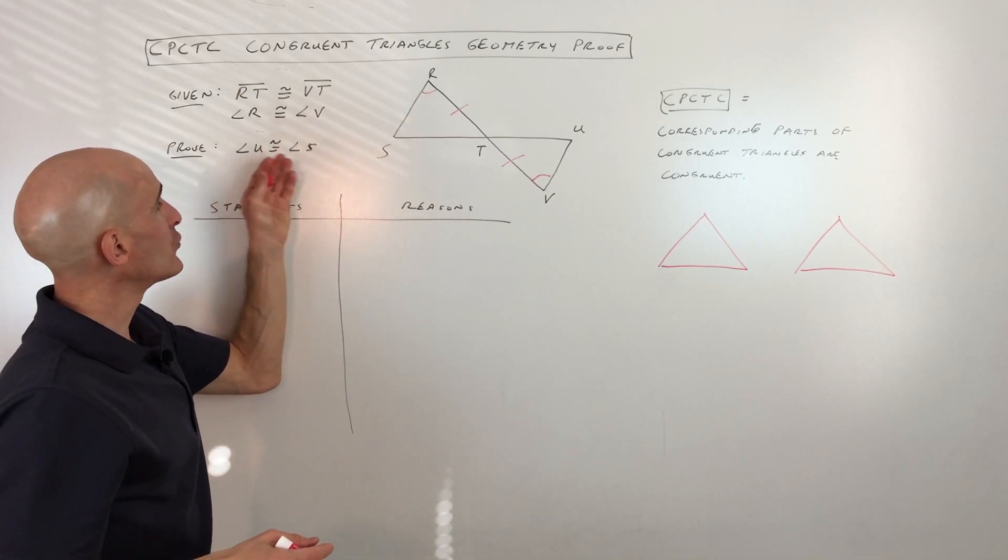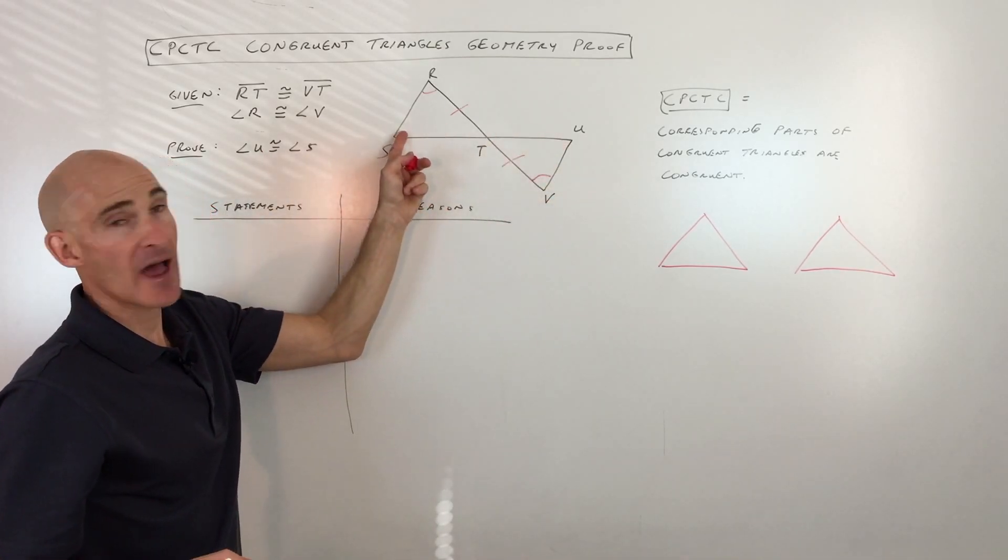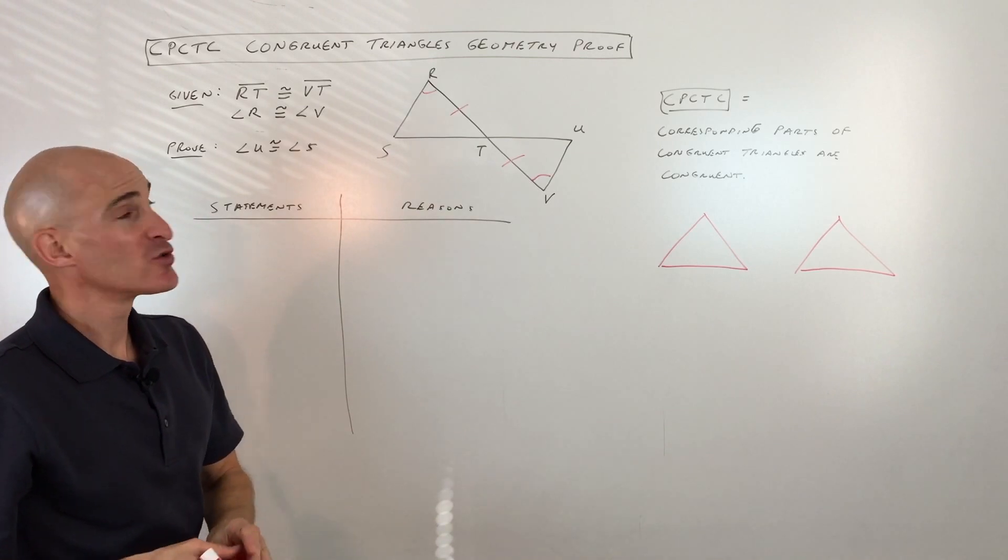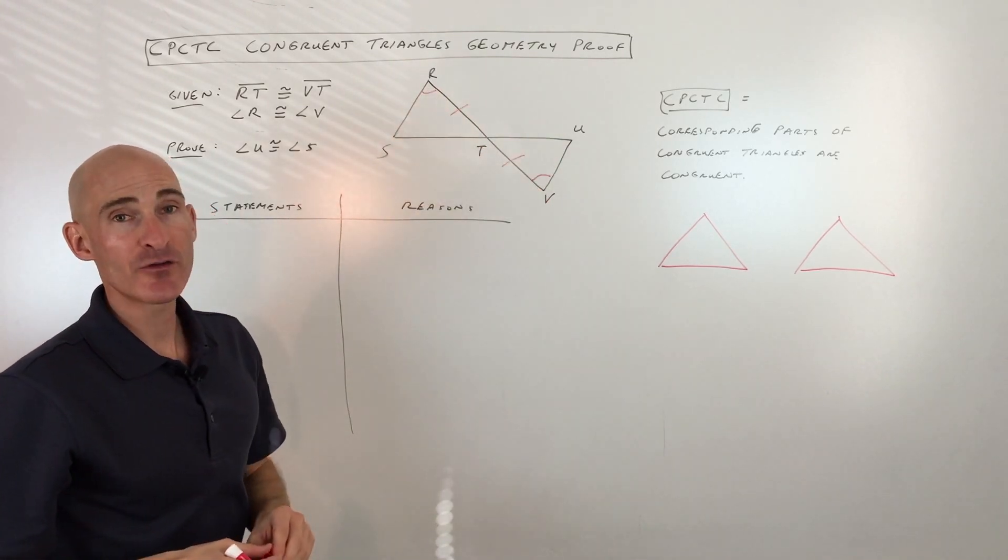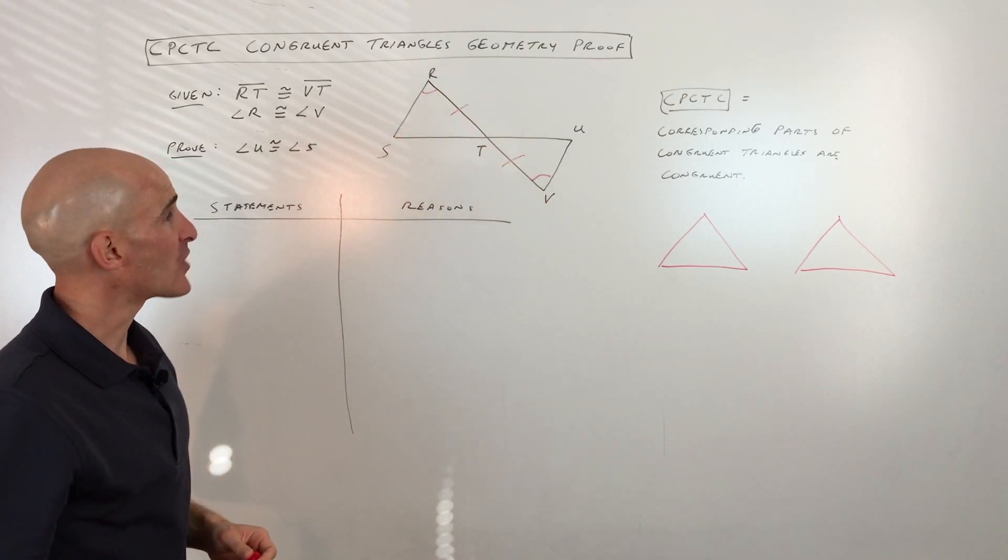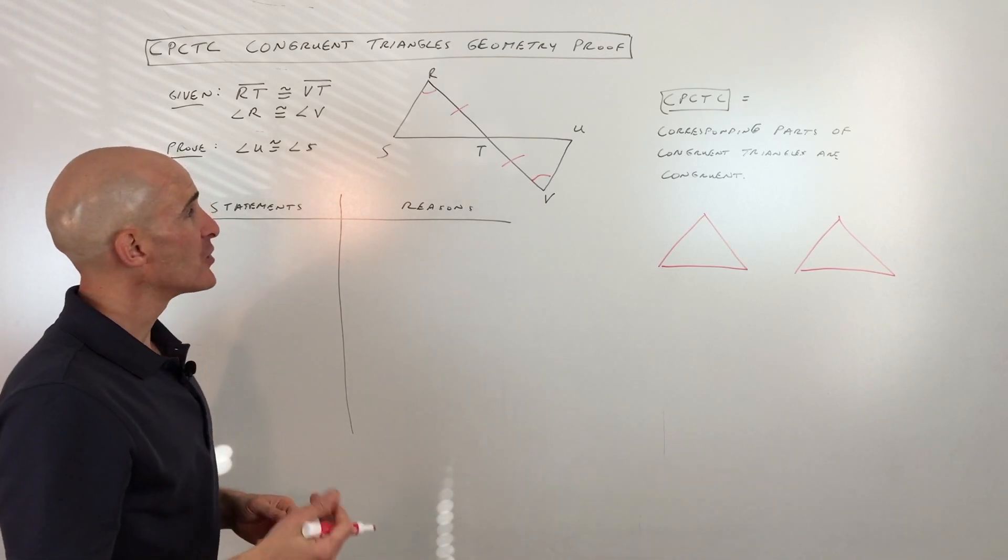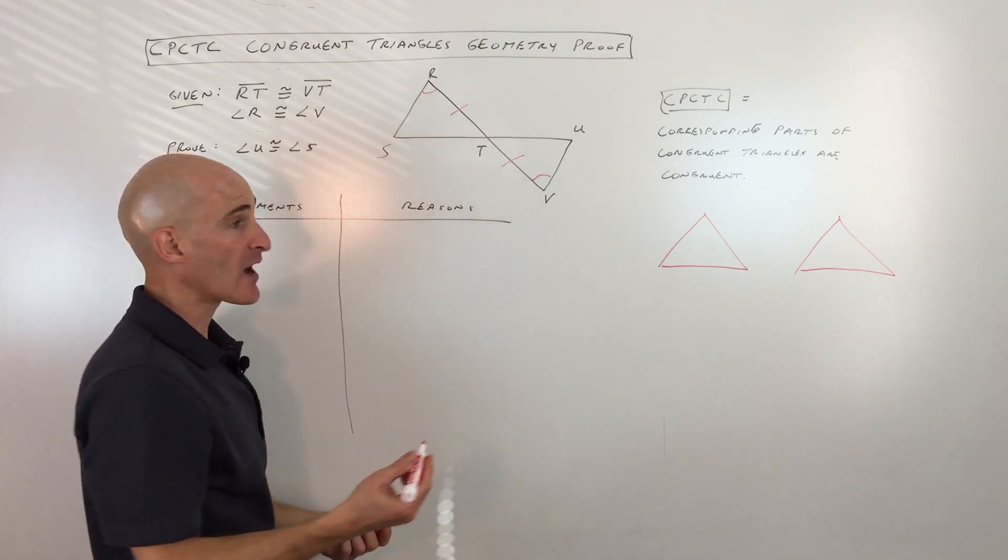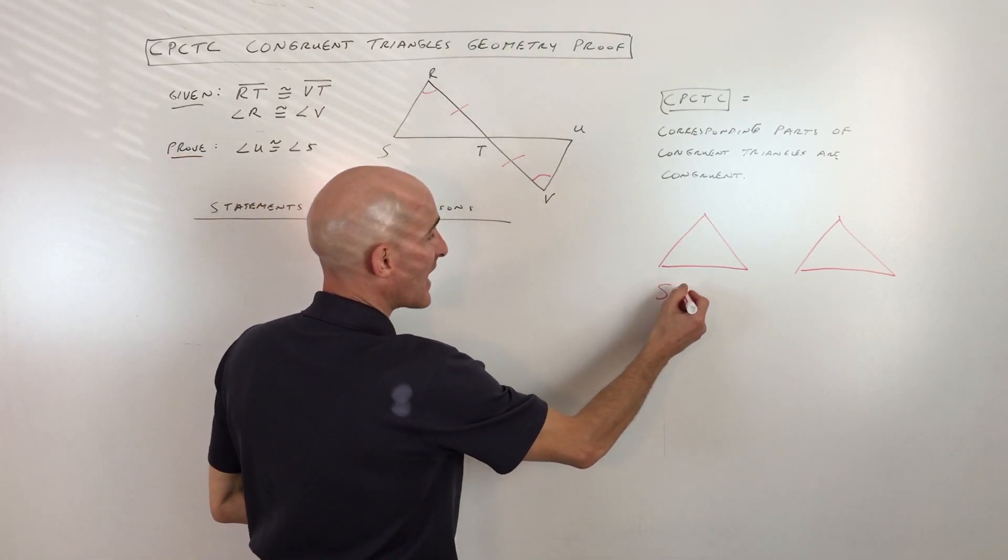Okay, and then what we're trying to prove is that angle U is congruent to angle S. Okay, but the first thing we want to do is we want to prove these two triangles congruent. Now, if you've been working with the congruent triangles chapter in your geometry class,